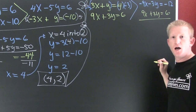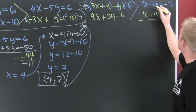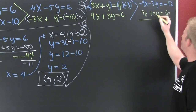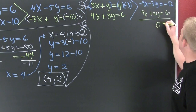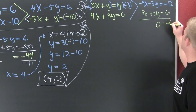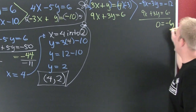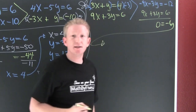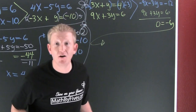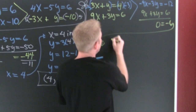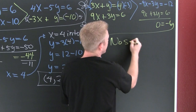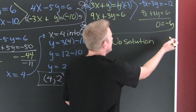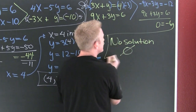Now it's time to add them straight on down. No x's! No y's! So I have nothing — 0 equals negative 6. Wait — is zero ever equal to negative 6? No! Then we have no solution.